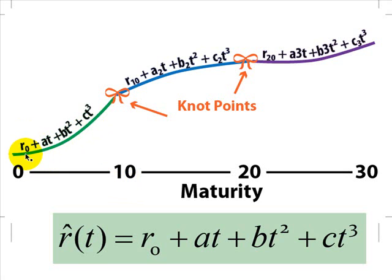r sub-zero is going to be the y-intercept, the short-term interest rate. Then we solve for a, b, and c. That gives us a function that would fit to the short-term maturities, or maturities up to 10 years. Then, at a knot point, we start a new cubic polynomial. That's the basic idea.